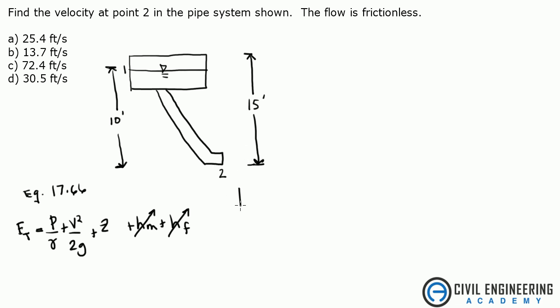So what we have is pressure at 1 over gamma plus velocity at 1 squared over 2g plus elevation at 1.